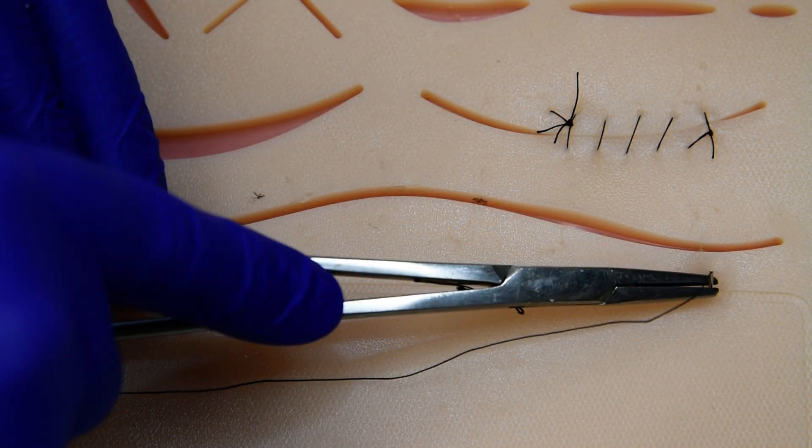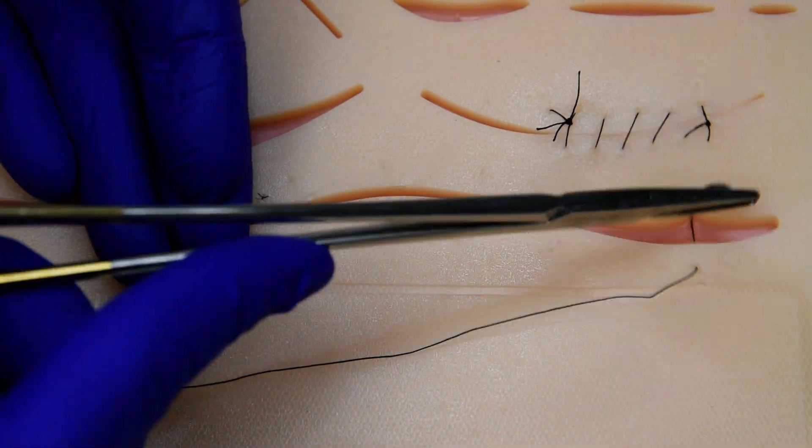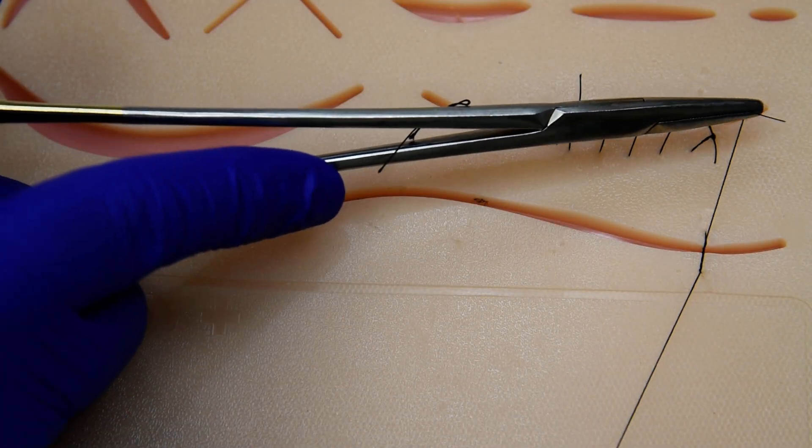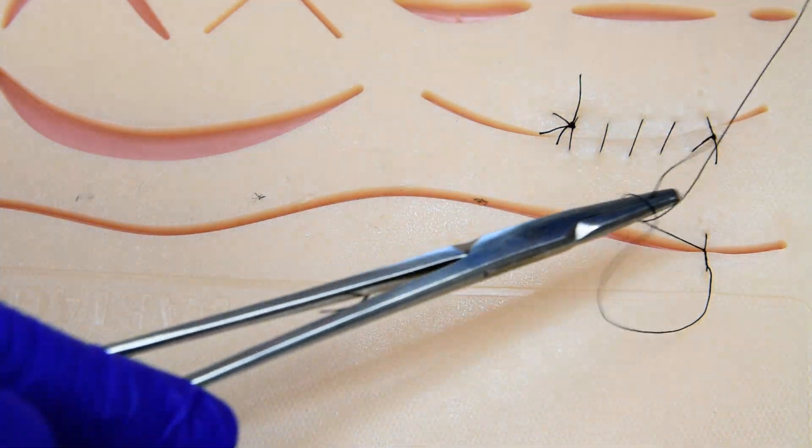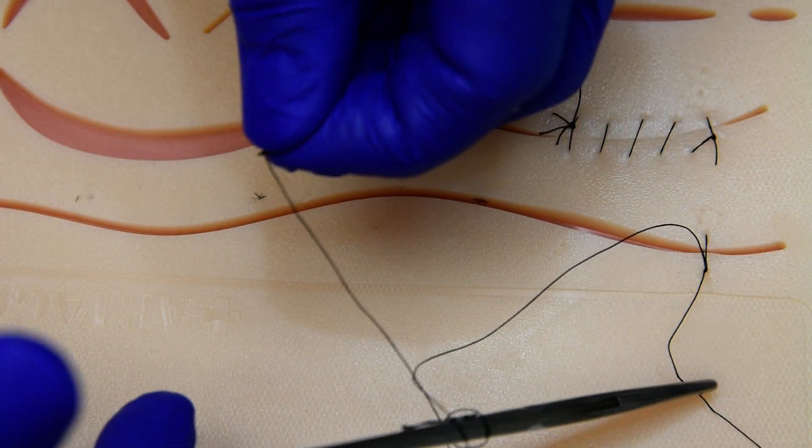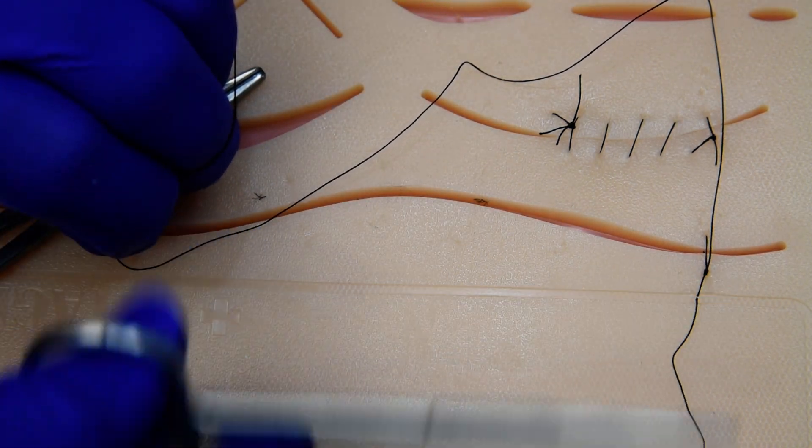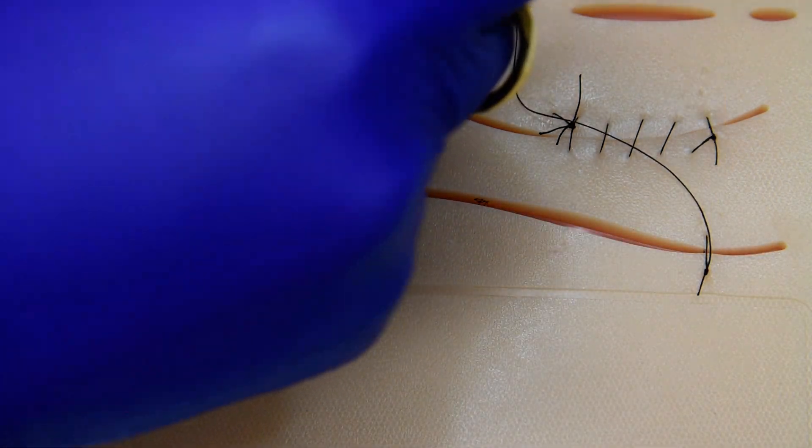We're going to start the same with a simple interrupted first for our interlocking continuous. So we'll tie our first knot, and then we can cut that tail and we're going to keep all of our knots on the same side.